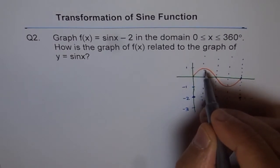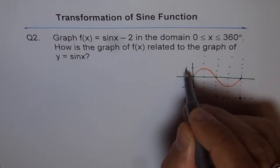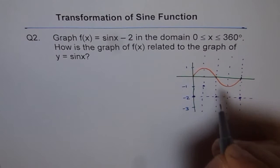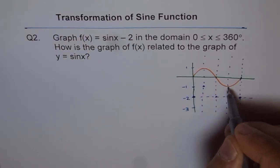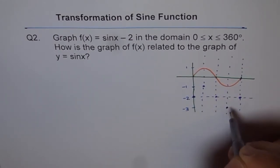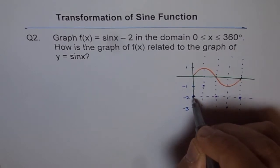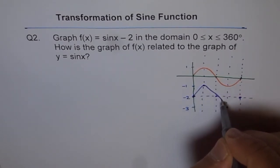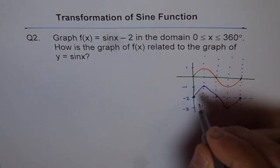Now, the maximum will go two units down. So from 1, it will go to -1. The minimum from -1 will go to -3. So that is our sine wave. So we have a wave here. Well, it's not a very nice graph, but anyway.